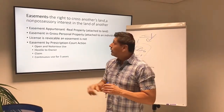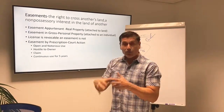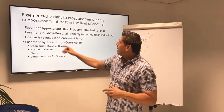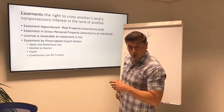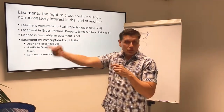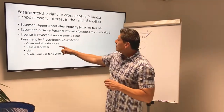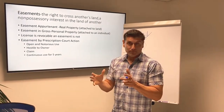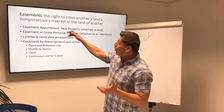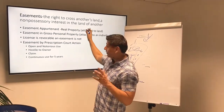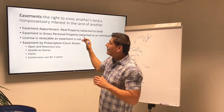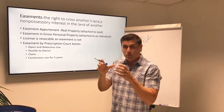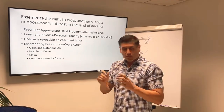Let's review. Easement appurtenant — it goes with the house, it's real property, it runs with the land for the benefit of the land. Easement in gross — considered personal property, it's the right of an individual to cross your land. Easement by prescription — you go to court to try to get this easement because you don't have it originally. And all these easements can be defined as the right to cross another's land, and each is considered a non-possessory interest — you don't have the right to possess the land, but you do have the right to cross it.